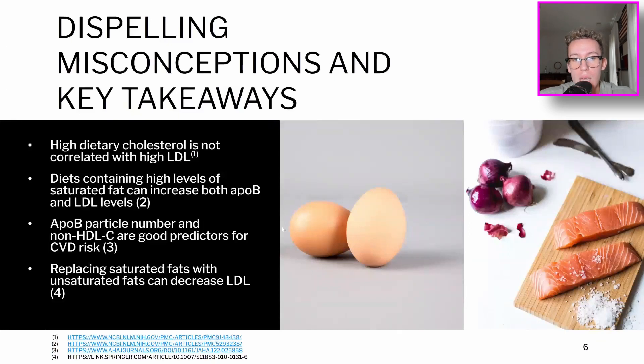ApoB particle number is probably a better predictor of cardiovascular disease risk, but both apoB particle number and non-HDL cholesterol are good predictors of cardiovascular risk. And when I say HDL cholesterol, that's just what it's called in the medical world. HDL and LDL are not actually cholesterol, they are lipoproteins that carry cholesterol. Lastly, if you're looking for a dietary intervention, we have a few studies that show replacing saturated fats with unsaturated, or so that could be poly or mono unsaturated fats, can decrease your LDL level, which may also result in a lower risk of cardiovascular disease.